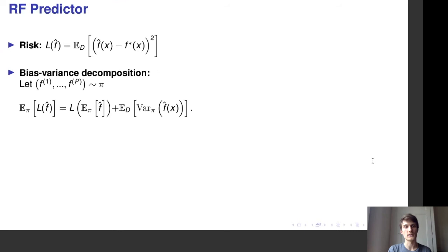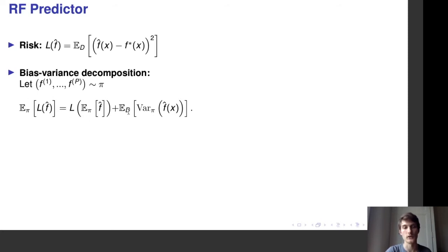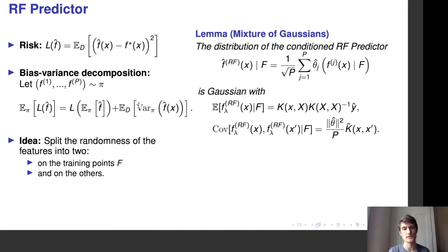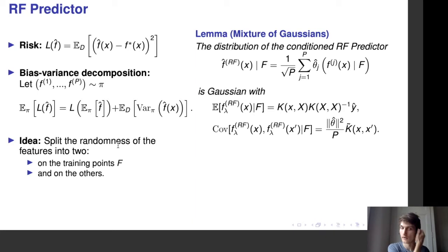Our strategy is to study the risk — the mean squared error over distribution D — using the bias-variance decomposition: the expected risk equals the risk of the expected predictor plus the variance of the predictor. To study these two terms, we split the randomness of the features into the randomness on the training points (described by the data matrix) and outside the training points. Thanks to the Gaussian assumption, we can disentangle these two types of randomness.